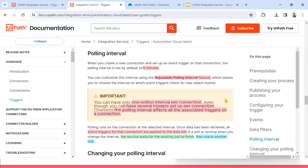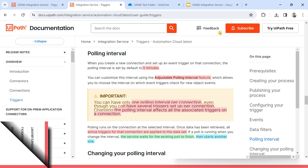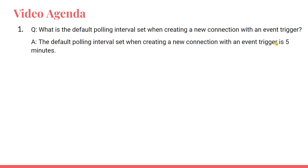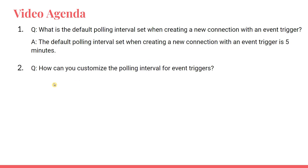Now let's get back to the slide and see if we can answer those questions. Let's start our very first question: What is the default polling interval set when creating a new connection with an event trigger? The answer is five minutes.